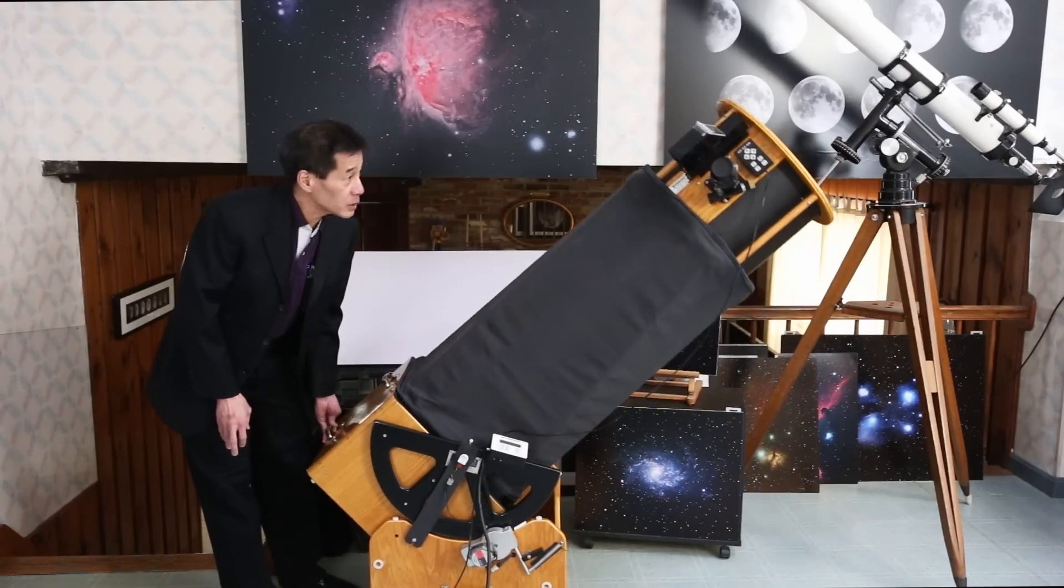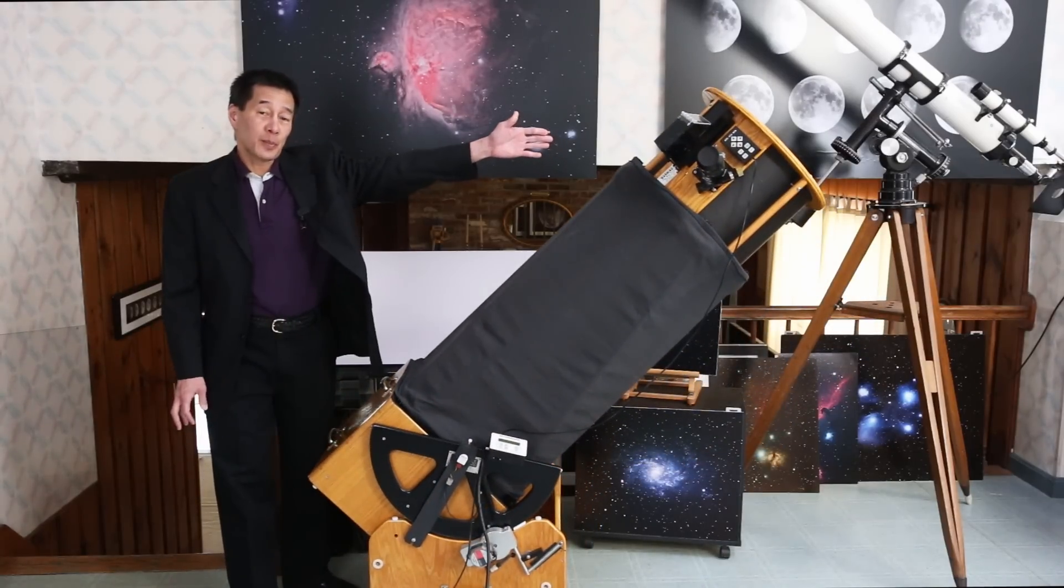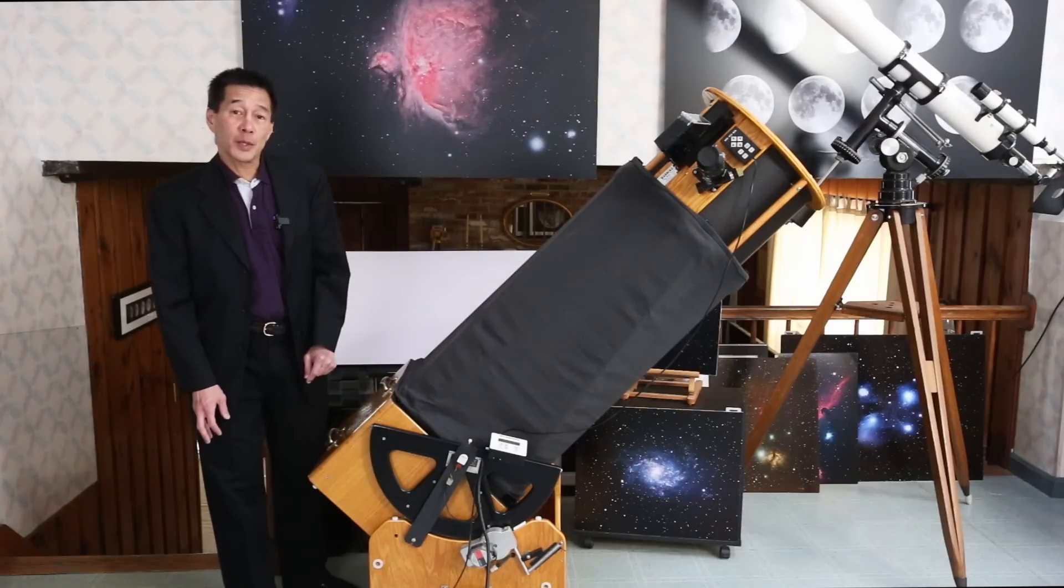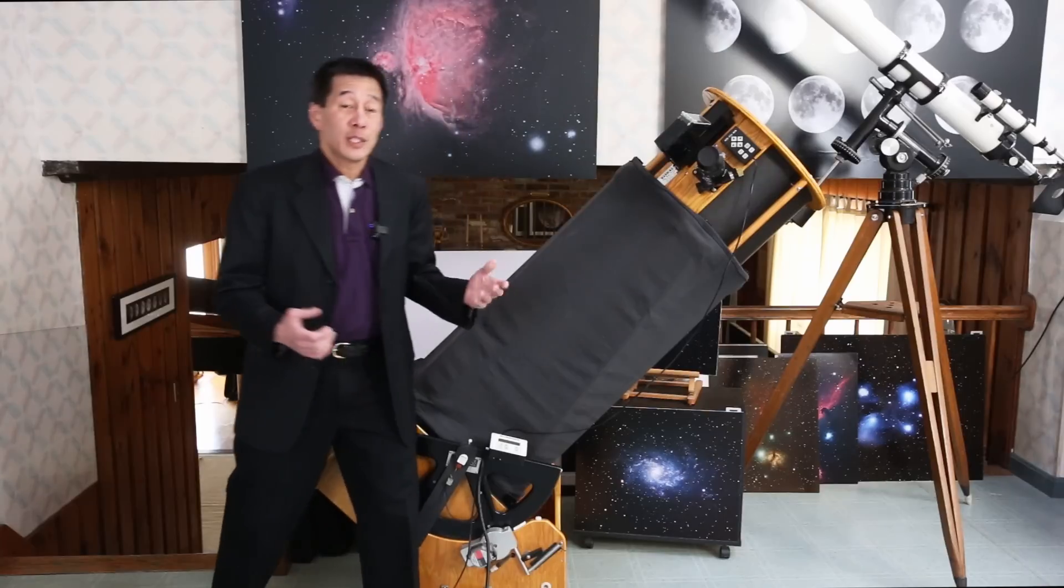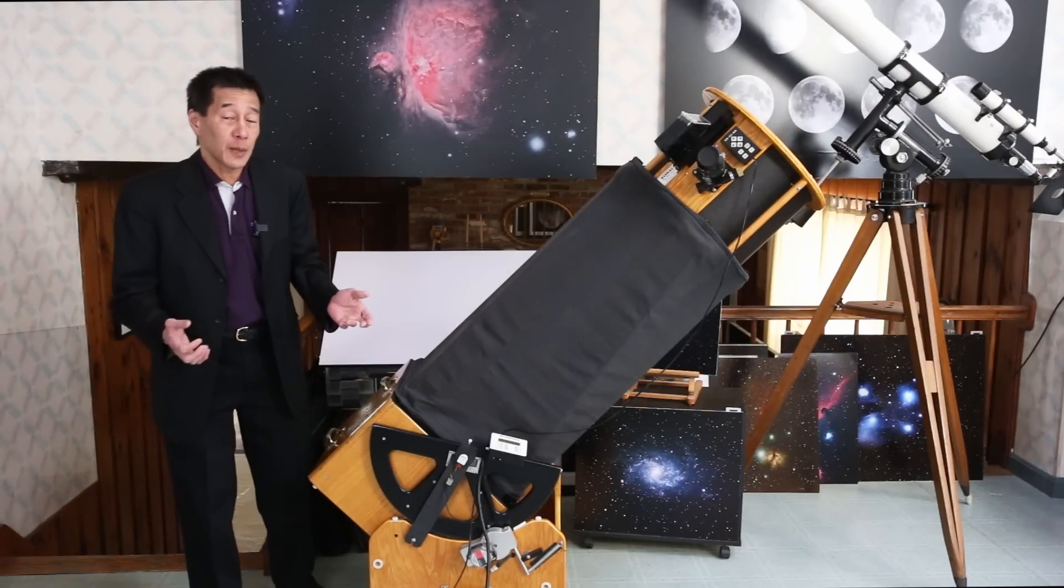It focuses the light into a secondary mirror, which you can't see buried underneath this circular structure here, and out towards the eyepiece. This is where you look. To change magnifications, you change eyepieces.